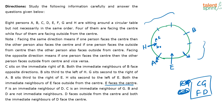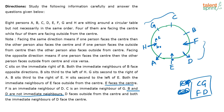A is placed. G sits second to the right of A, meaning G is here, and since C is an immediate neighbor of G, C is confirmed next to G. So G and C are fixed. It is also given that B and D are not immediate neighbors, so this position must be D and this one must be F. D faces outside from the center and both immediate neighbors of D face inside the center.